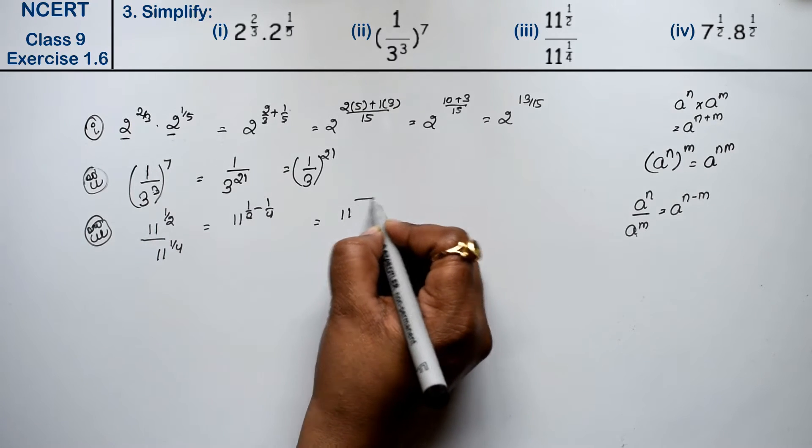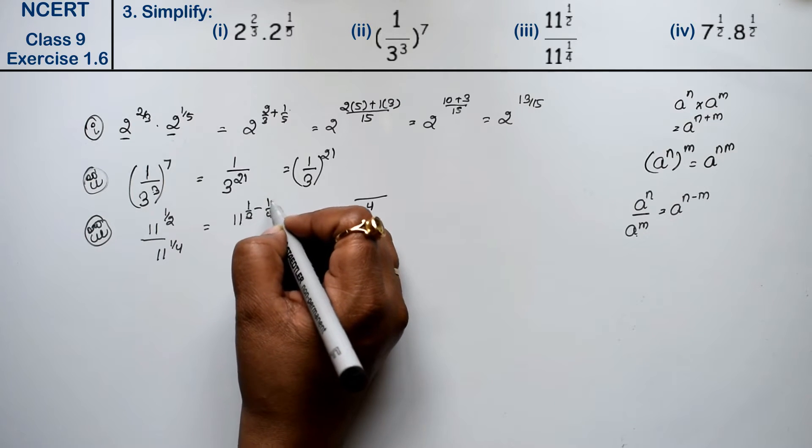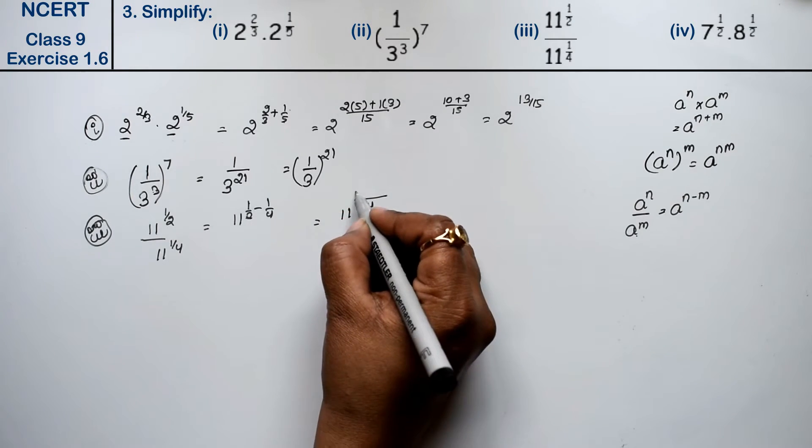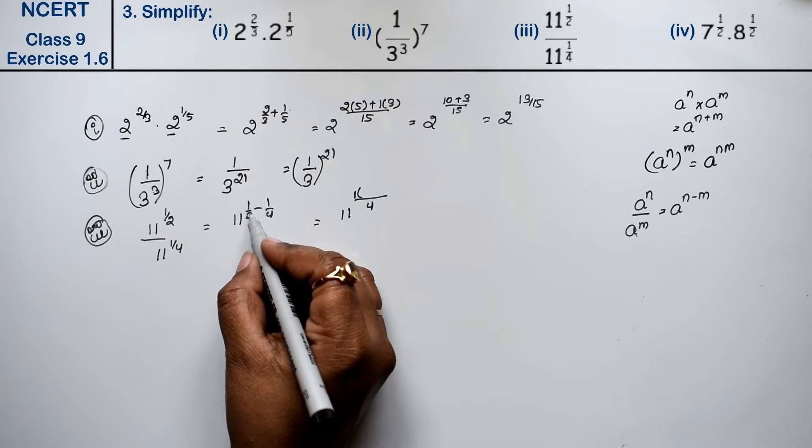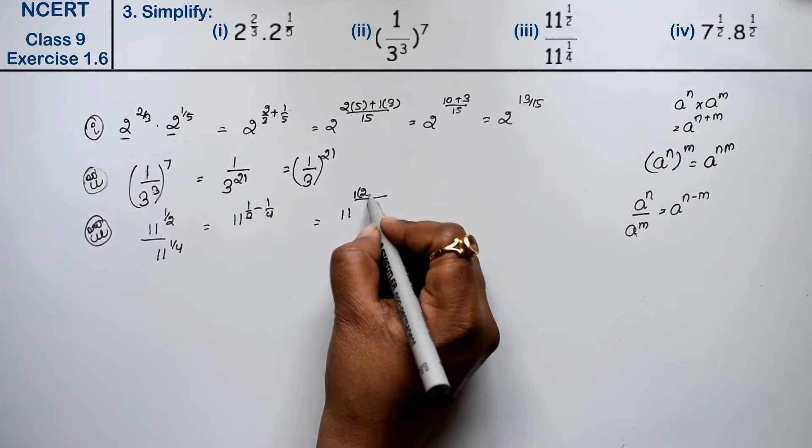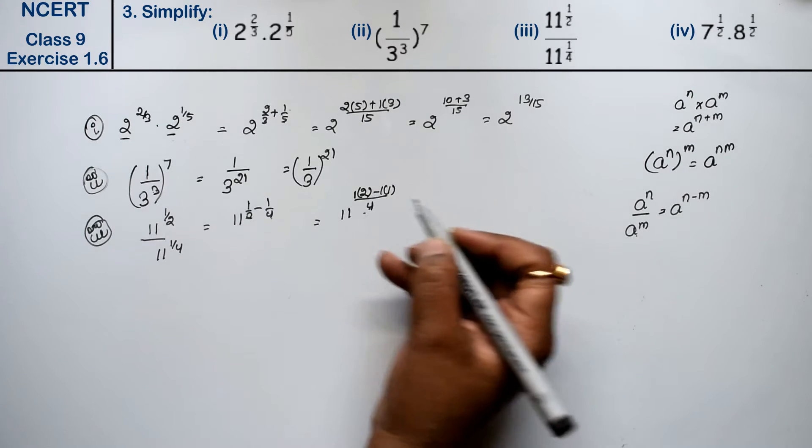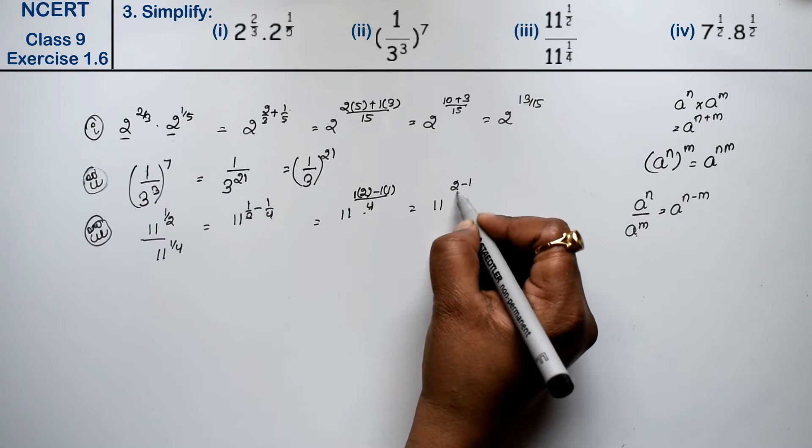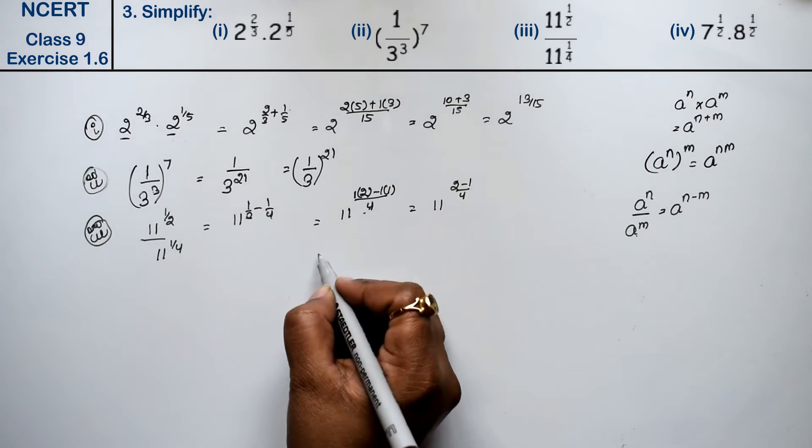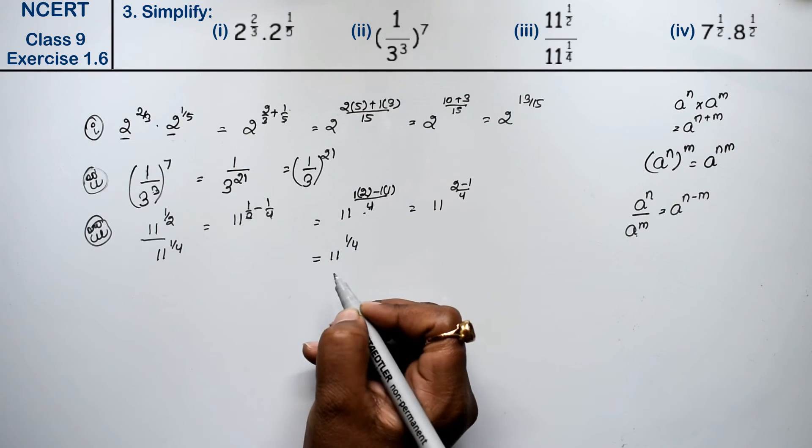11 to power, LCM of 2 and 4 is 4. 2 times 2 is 4, minus 1. 4 times 1 is 4. So how much is it? 11 to power 2 minus 1 upon 4. So how much can we write? 11 to power 1 upon 4 is the answer.